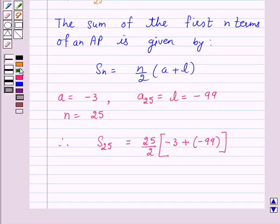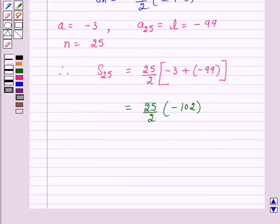And this is equal to 25 over 2 into minus 102, and this is further equal to minus 1275. Hence the answer for the above question is minus 1275.